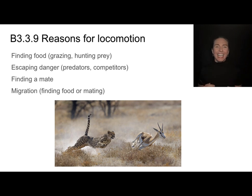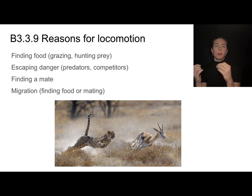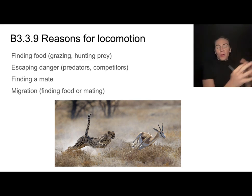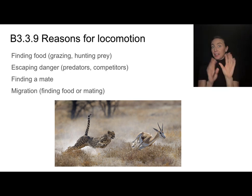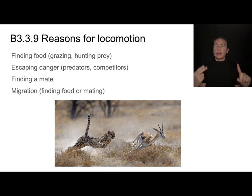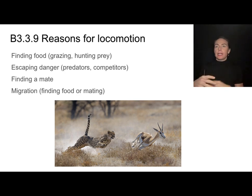Aside from breathing, there are lots of reasons why organisms might utilize locomotion. Locomotion is the movement of a whole organism — not all living things can do that. Motion could refer to just movement within an organism, but locomotion is special. This might include finding food, getting away from predators, finding a mate, or migrating — lots of different reasons why organisms would have evolved the ability to have locomotion.